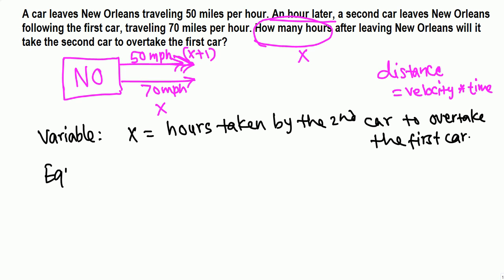Then we want to write down the equation. To overtake means they need to travel the same distance, so equal. And the first car is traveling one hour more, so x plus 1. This is the velocity times time that gives the distance. So 50(x + 1) equals 70x.